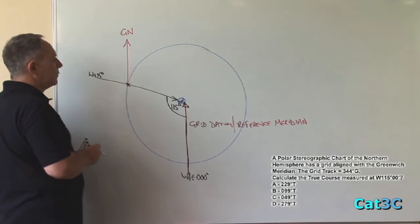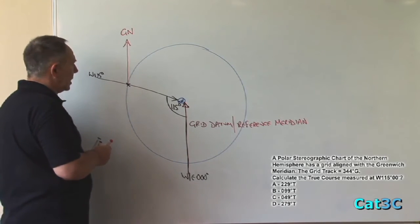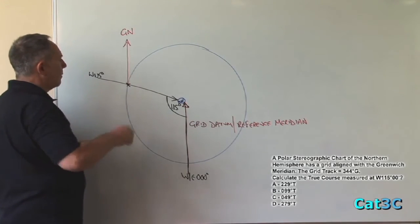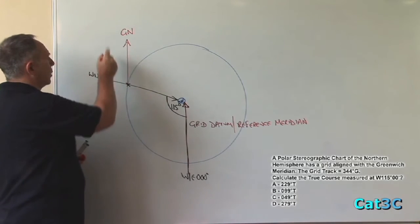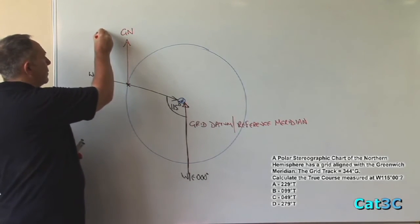So 344 degrees measured in a clockwise direction from grid north: 90 to the east, 180 to the south, 270 to the west and 344 is going to be pointing up to the north west, almost as far as grid north.